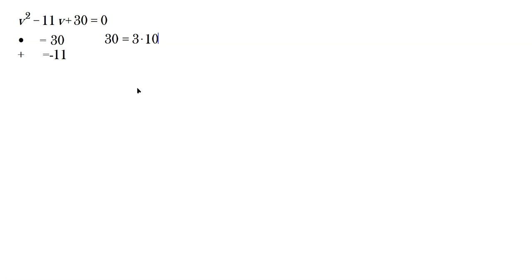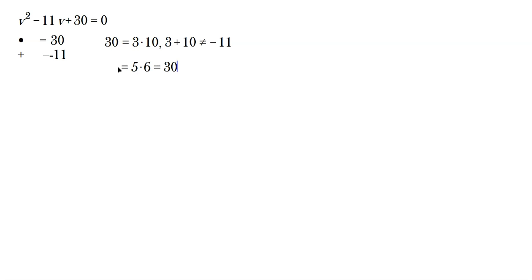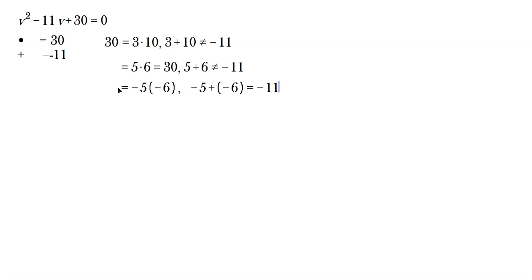For example, 30 is like 3 times 10, but 3 plus 10 doesn't give you negative 11, so that's useless. Then try 5 times 6 — that equals 30, but 5 plus 6 is not negative 11, so useless. So try negative 5 times negative 6: their product is 30, and negative 5 plus negative 6 gives negative 11. So negative 5 and negative 6 are the numbers we need.